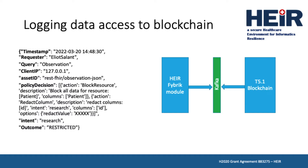All requests for data are logged by the Privacy Aware framework to a Kafka message queue, where they are read by the blockchain logging component. Logged information records the query that was issued, the time it was issued and by whom, the policy that was applied to the returned data, and the outcome decision of the request, among other things.